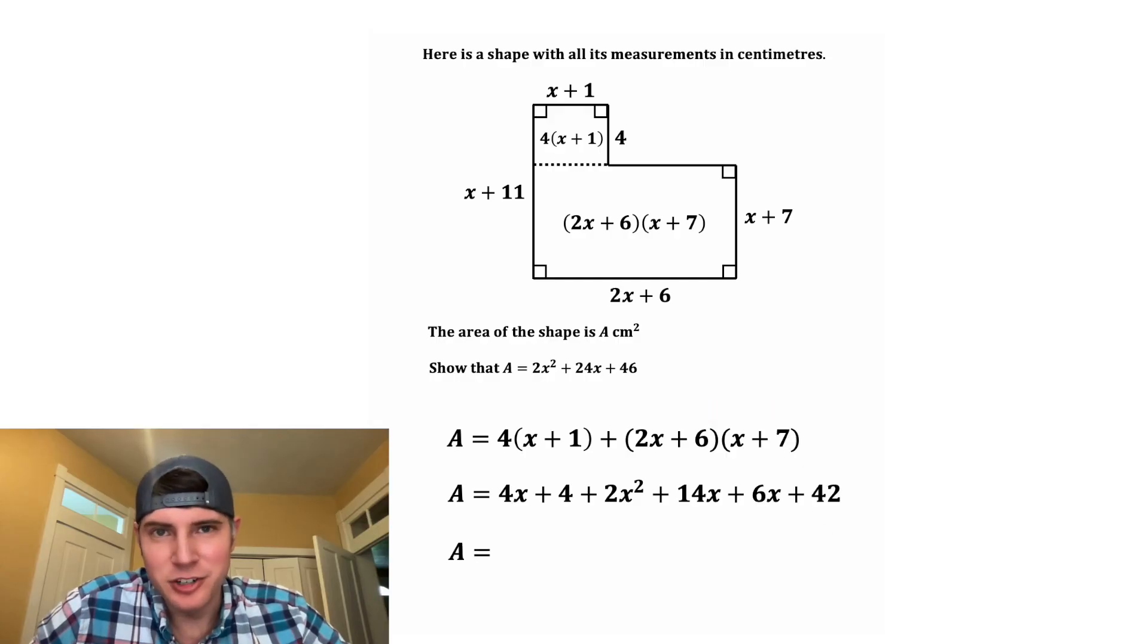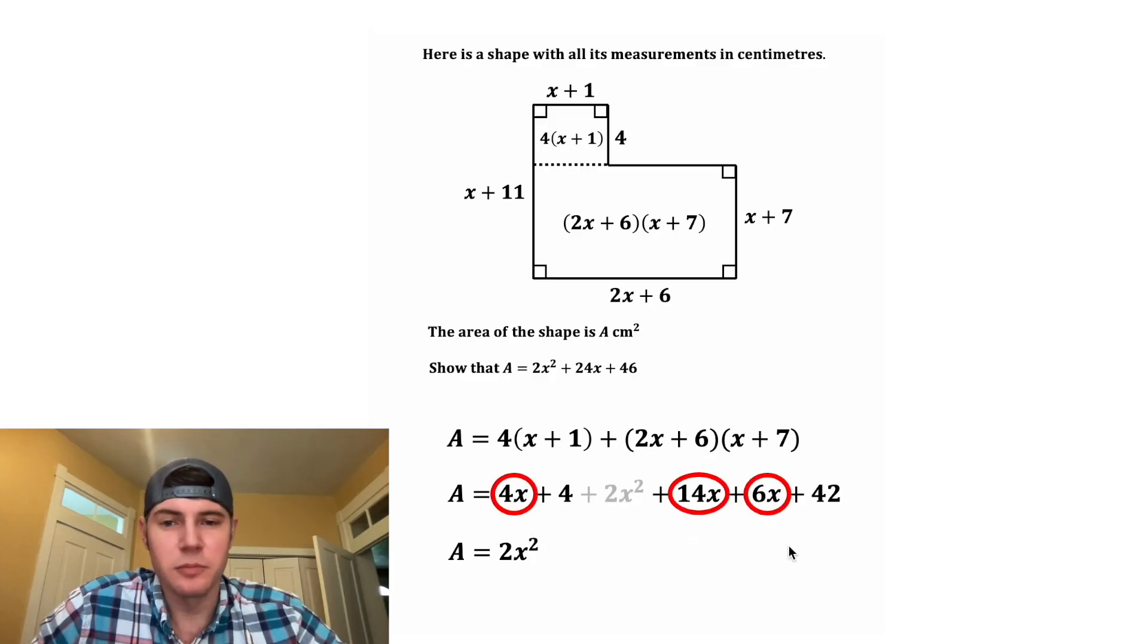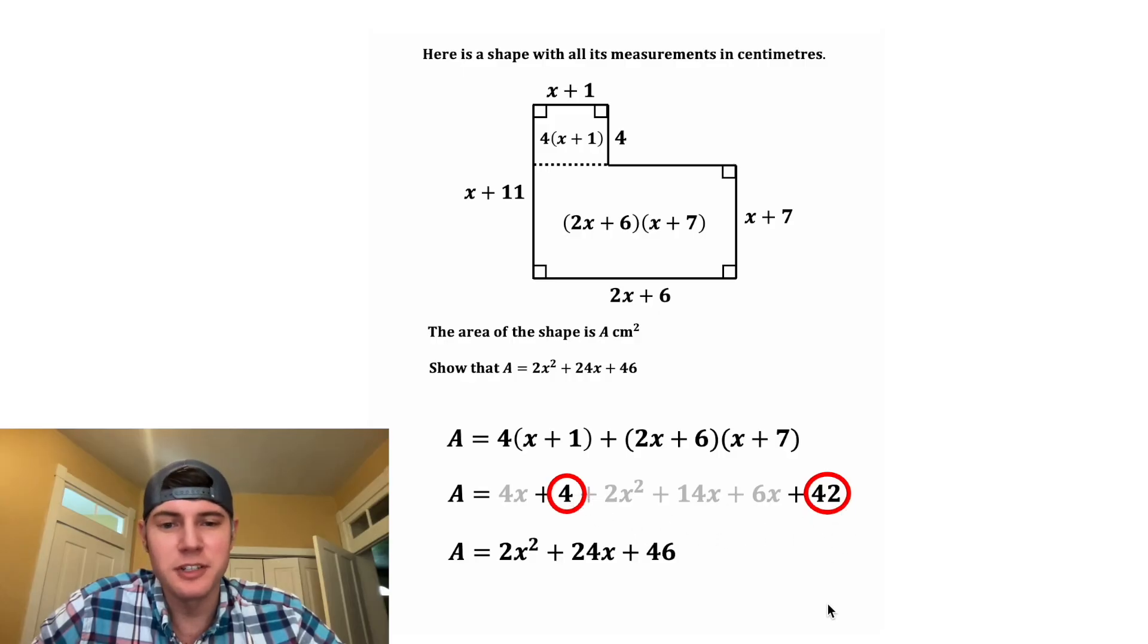And now we can combine like terms. We have one x squared term, so we'll just bring that down. We have 3x terms. 4x plus 14x is 18x, plus 6 is 24x. And then we have two constant terms. 4 plus 42 is equal to 46.